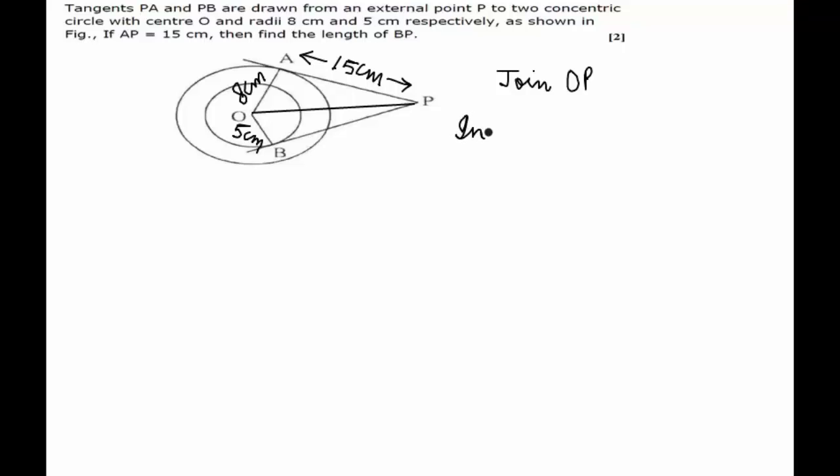If you consider triangle OAP, as the radius is perpendicular to the tangent, we can say that angle OAP would be 90 degrees, and this makes triangle OAP a right angled triangle.